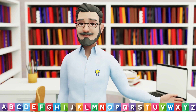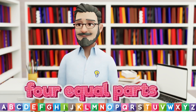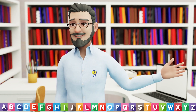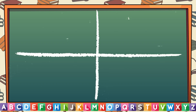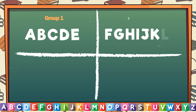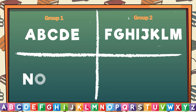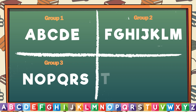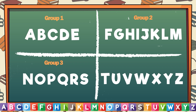Do you know that if we have to divide a dictionary into four equal parts, then the letters would fall into the following groups? A through G form Group 1. H through M form Group 2. N through S form Group 3. T through Z form Group 4.